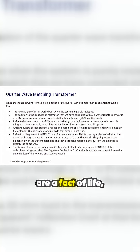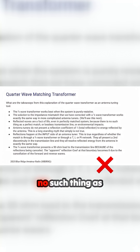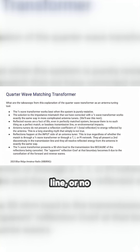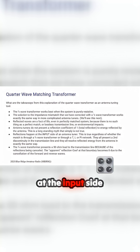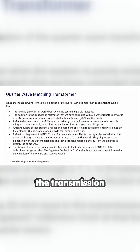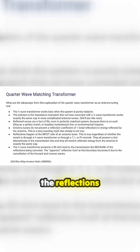Reflected waves are a fact of life, even in perfectly matched systems, because there's no such thing as a perfect match, a lossless transmission line, or no environmental impacts. Reflections are there. At the input side of the antenna, the quarter-wave transformer presents a 50 ohm load to the transmission line because of the reflections being canceled.